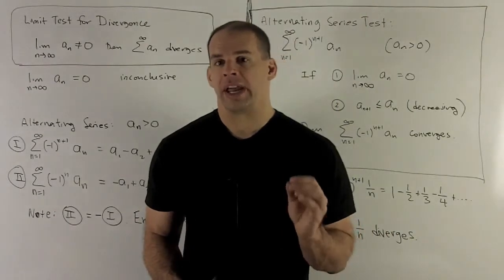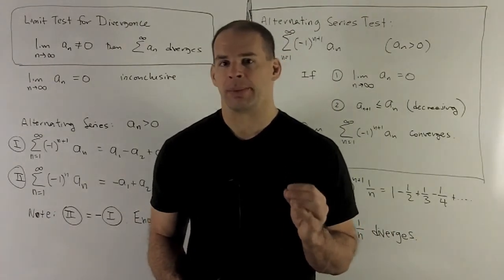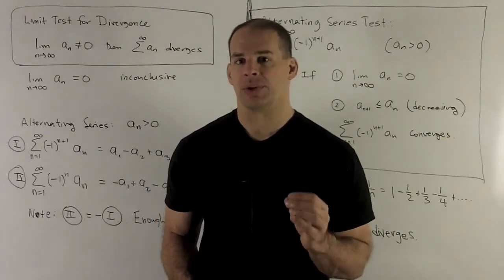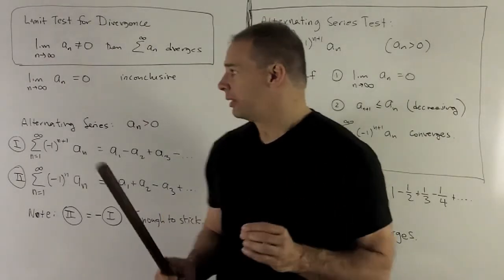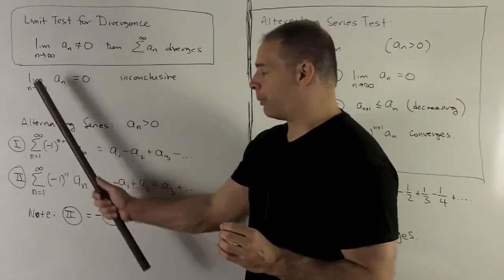So for the alternating series, we're going to be able to do something with the fact that the limit of a_n goes to zero. So the alternating series test is going to repair this fact somewhat.